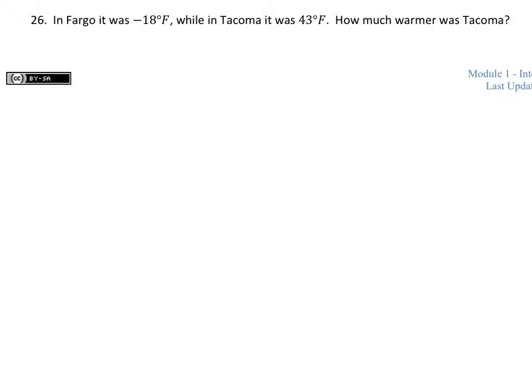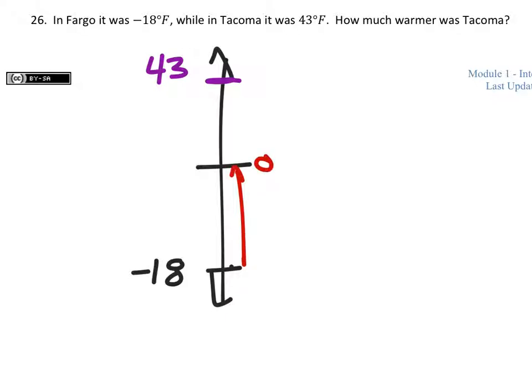In Fargo it was negative 18 degrees Fahrenheit, while in Tacoma it was 43 degrees Fahrenheit. How much warmer was it in Tacoma? All right, so this is a difference. On the thermometer we're looking at a vertical number line. Well, we got negative 18, which is right here. It's not proportional. And this goes all the way up to 43 degrees. So from negative 18 we'd have to go up to 0 right there, so we had to go up 18. But then we had to go up another 43.